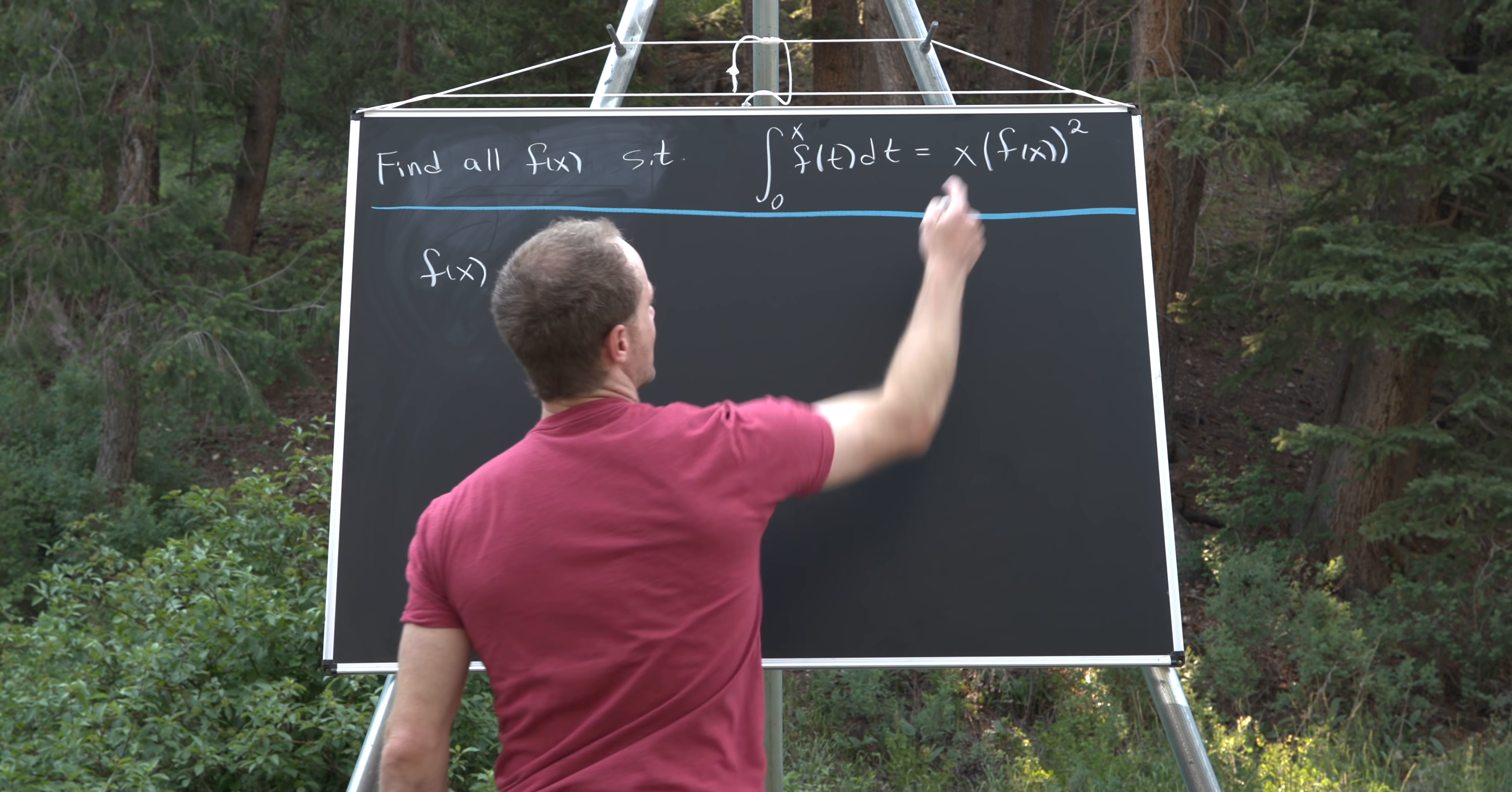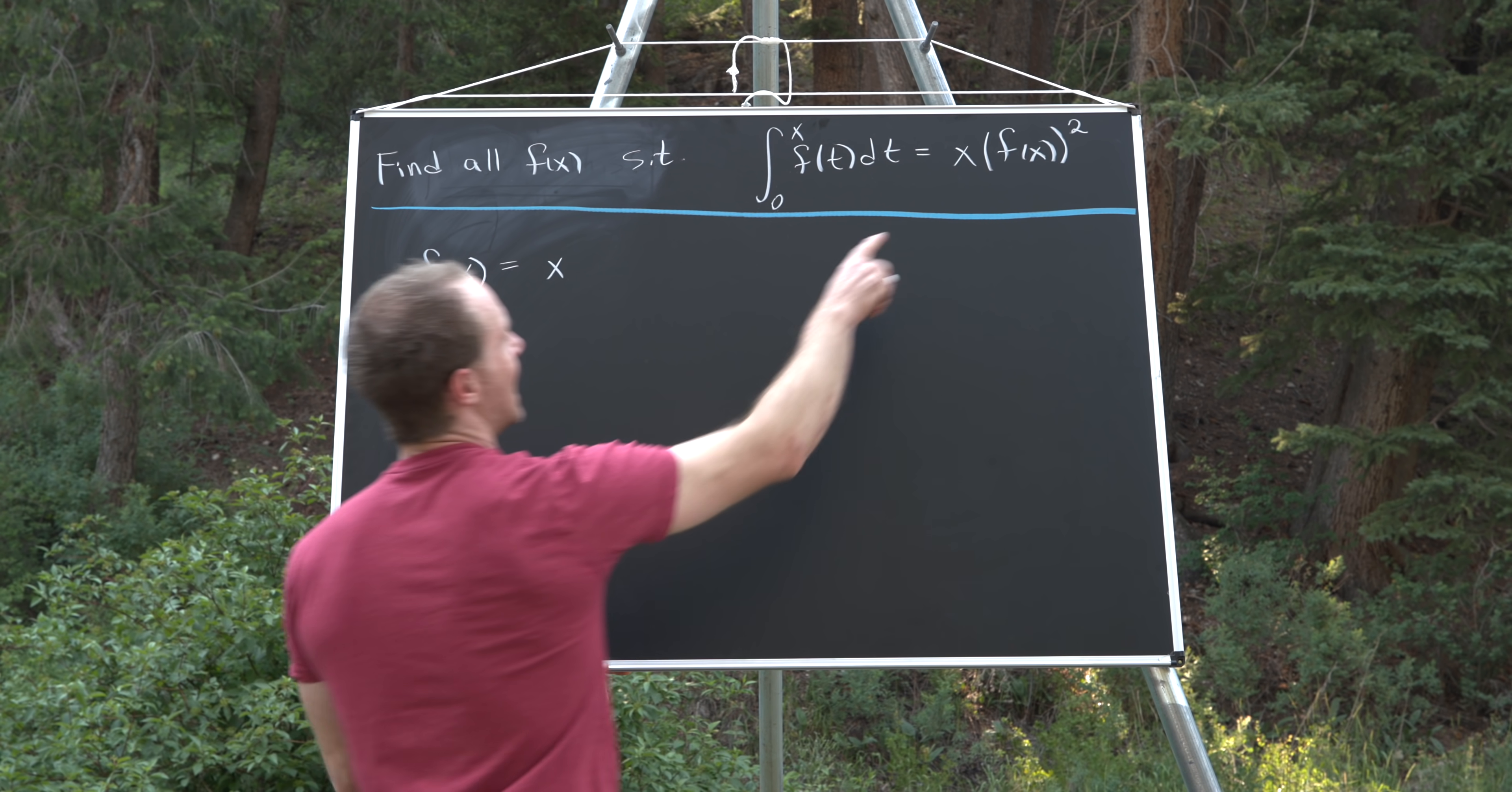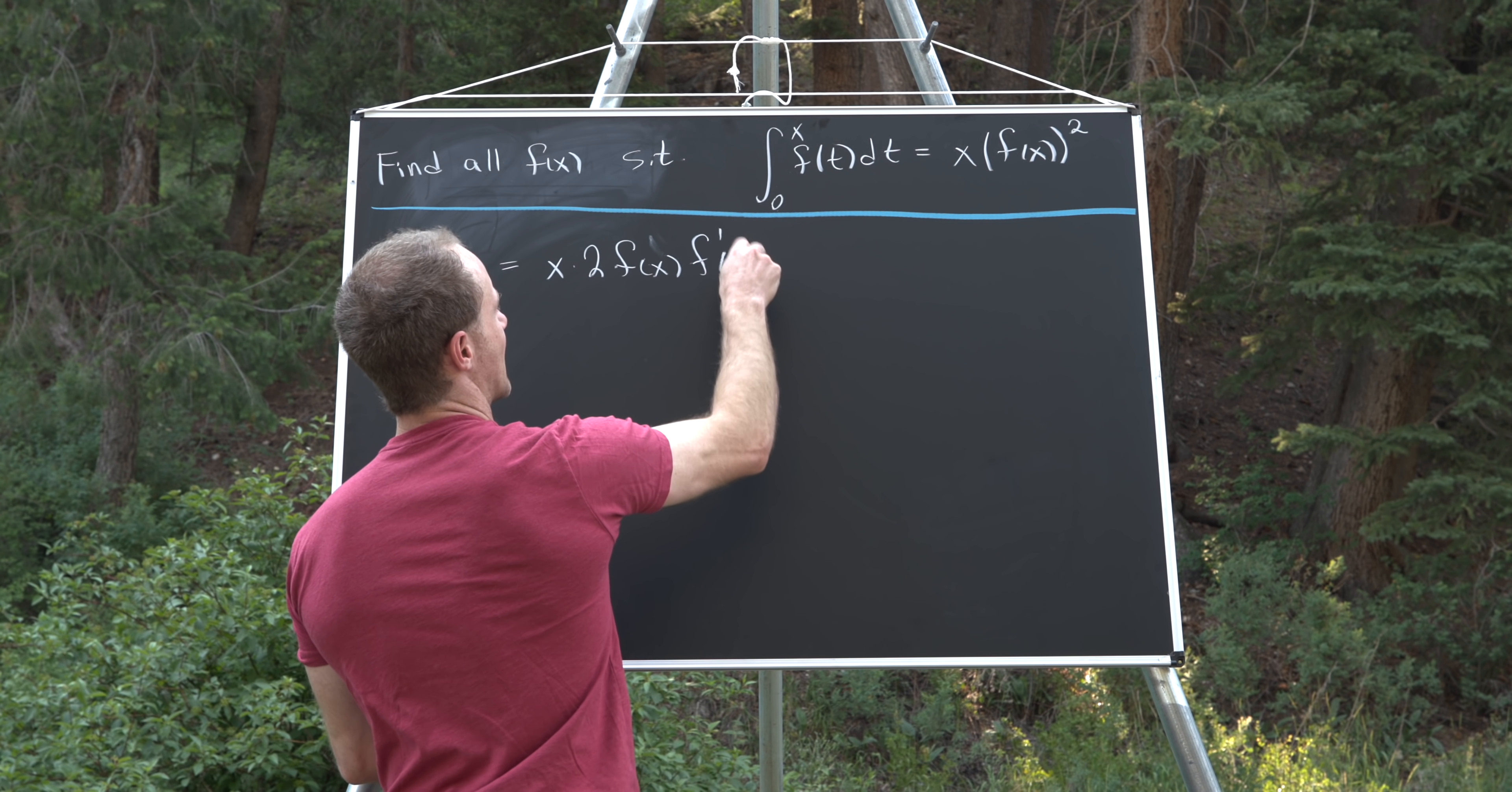Then the derivative of the right-hand side, we have to be a bit careful with because we have to use the product rule and the chain rule. So we'll get x times the derivative of f of x squared. That's going to be two times f of x times f prime of x.